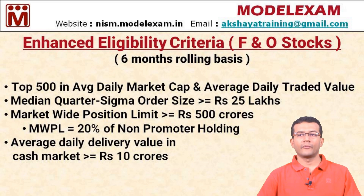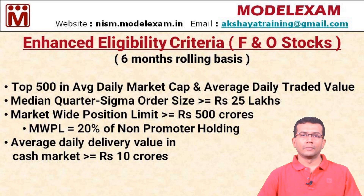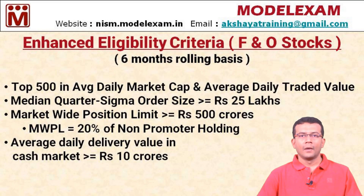The very first condition is that the stock must be in the top 500 in average daily market capitalization and average daily traded value. Market capitalization denotes the size of the company, so the stock should be among the top 500 in size. The stock should also be highly popular among traders, with a high daily traded value, and must rank in the top 500 for that as well. This is calculated on a six-month rolling basis.